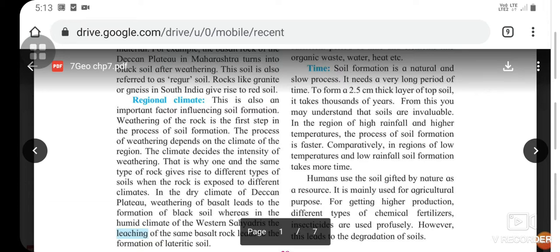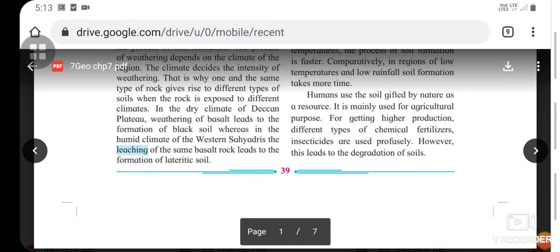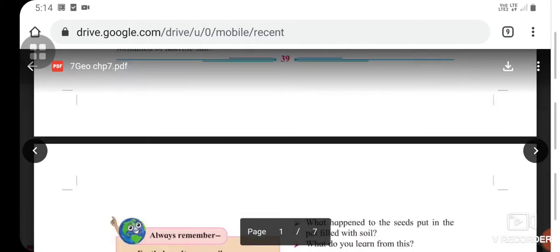In regions of high rainfall and higher temperatures, the process of soil formation is faster. Comparatively, in regions of low temperatures and low rainfall, soil formation takes more time. Humans use the soil gifted by nature as a resource. It is mainly used for agricultural purposes. For getting higher production, different types of chemical fertilizers and insecticides are used profusely. However, this leads to the degradation of soils.